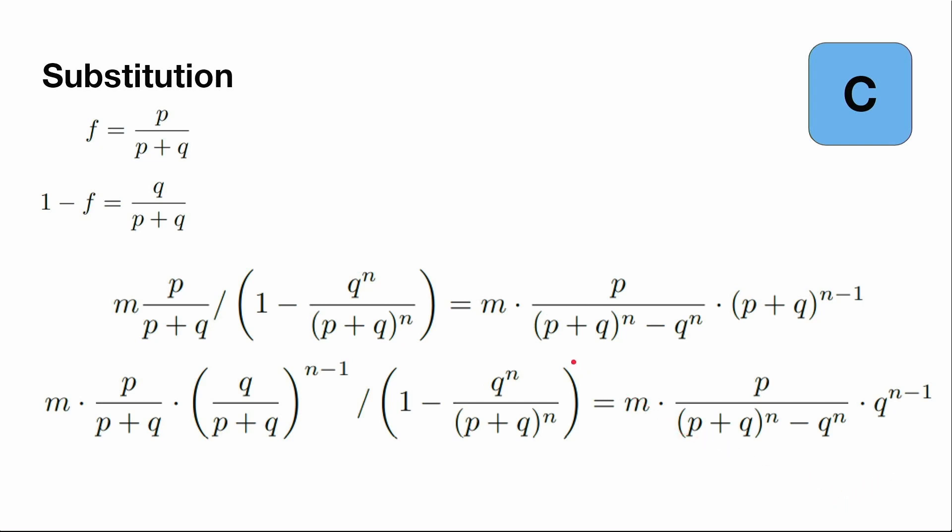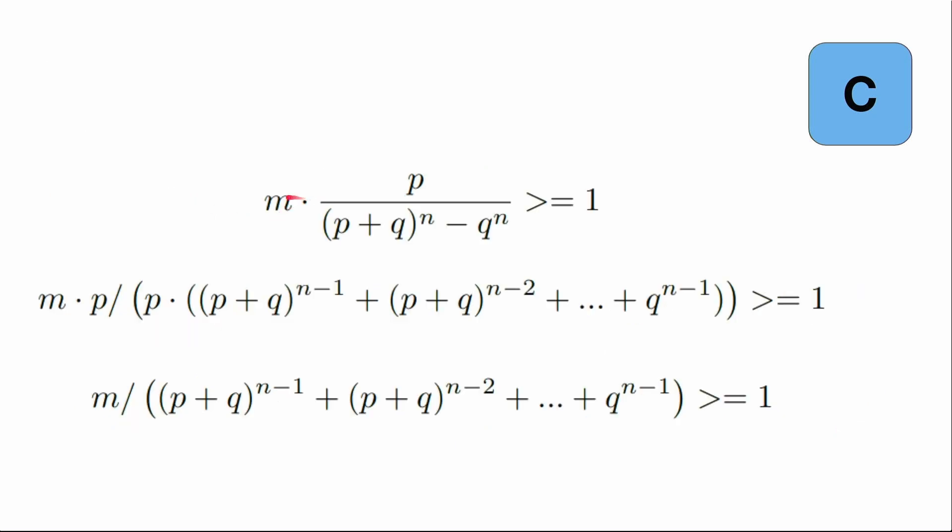What we want to have is for these numbers to be integers. This is integer and this is also integer. This means that this number multiplied by the GCD of these two numbers should also be integer. But the GCD of these two numbers is one because they are numerator and denominator of the fraction. So we want this number to be integer, so let it be at least one.